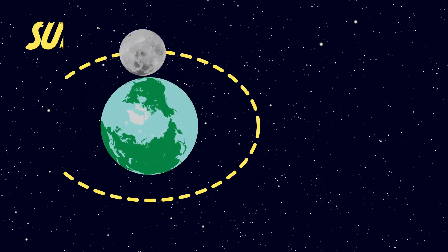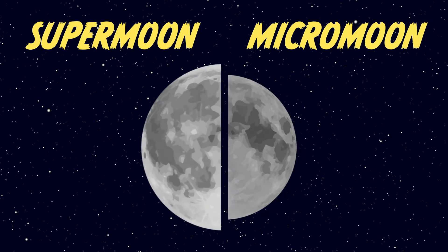This means that the supermoon ends up looking about 15% larger and 30% brighter than the micromoon. Definitely enough to be noticeable in the sky.